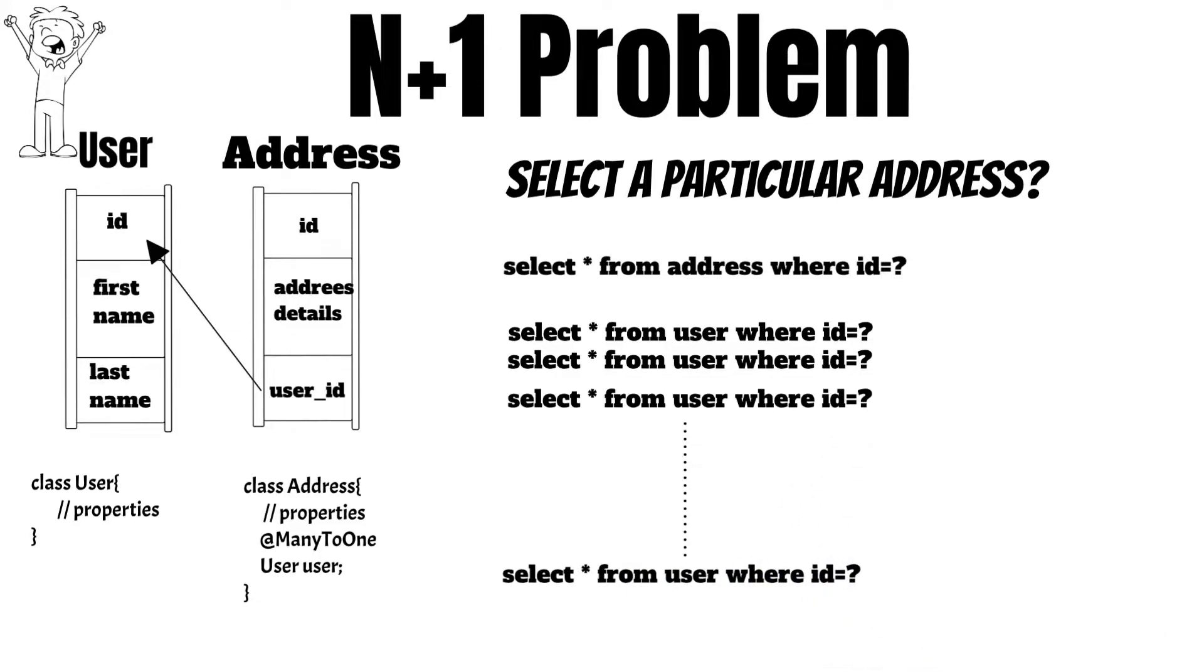So we wanted to select one record, so there should have been one query, but Hibernate here is executing n additional queries. So this is the n plus one problem which is very commonly talked about in Hibernate, where instead of running one query there are n additional queries run.